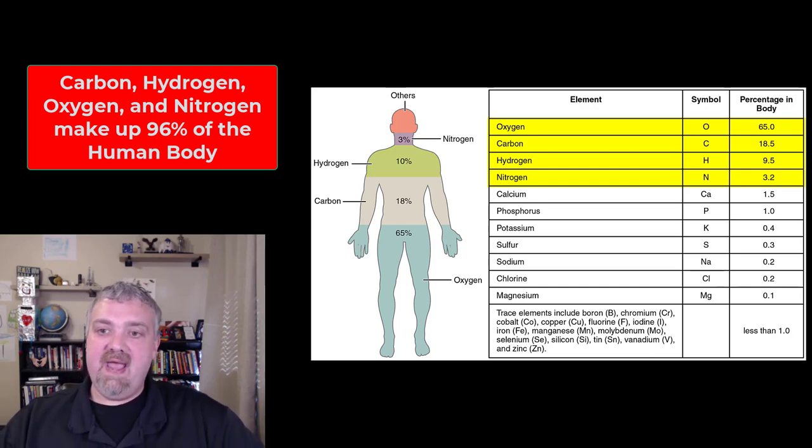And then all of your macromolecules like your carbohydrates, lipids, and proteins, all of them are going to have carbon, hydrogen, and oxygen as well. So those are the four key ingredients in making a human being and then you just sprinkle in all the rest of them.